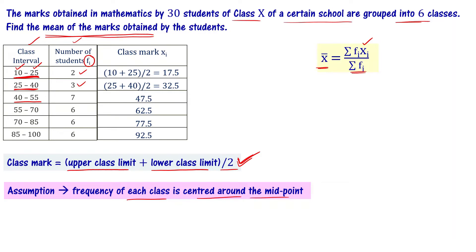Once we have the xi values and fi values, for the numerator we need fixi. That's 2 times 17.5, then 3 times 32.5, and so on. You find the sum of it, that is Σfixi, and Σfi is the frequency sum. Substitute these values in the formula and we get the mean. That's the direct method.